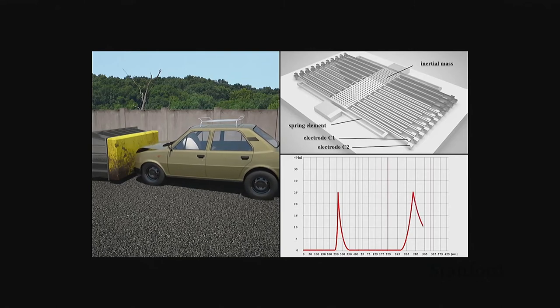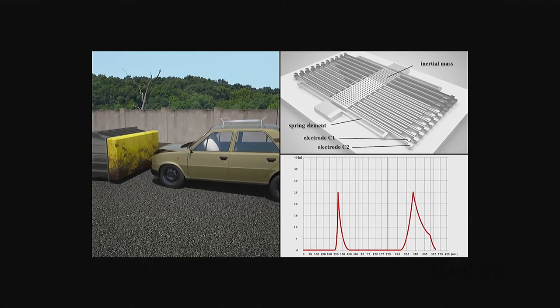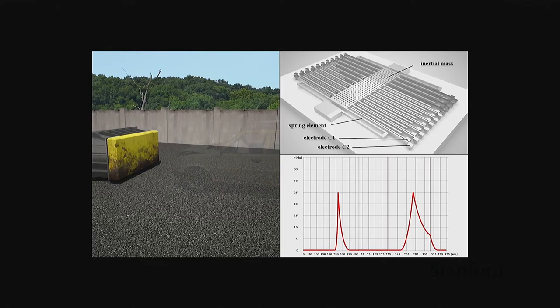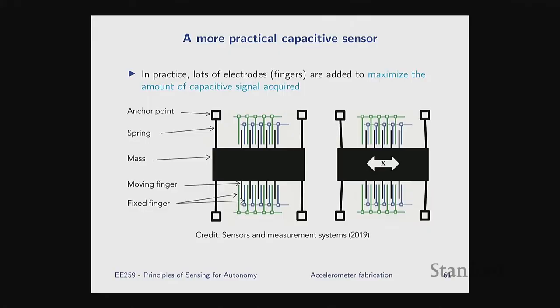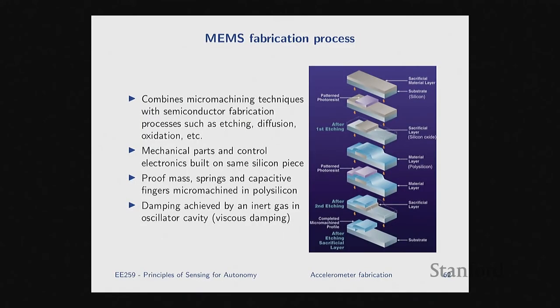You see how the proof mass moves back and forth and the capacitance changes accordingly, and you pick up the signal. That's basically the idea. If you look at how this is fabricated using the MEMS process — MEMS is a huge field, you can do your entire PhD on MEMS — but in one minute, what it enables is that it combines micro-machining techniques with silicon fabrication techniques.